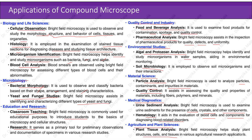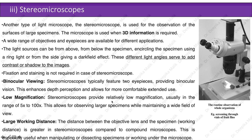The stereo microscope is used for the observation of the surface of large specimens where 3D information is required. A wide range of objectives and eyepieces are available for different applications. The light source can be from above, below, surrounding the specimen using a ring light, or from the side giving a dark field effect. These different light angles add contrast or shadow to the images. Fixation and staining are not required in case of stereo microscopes.